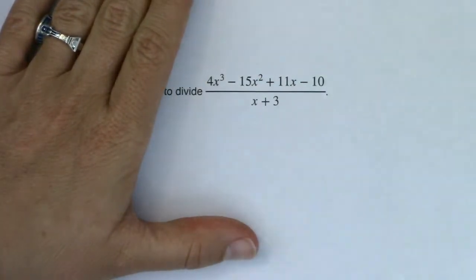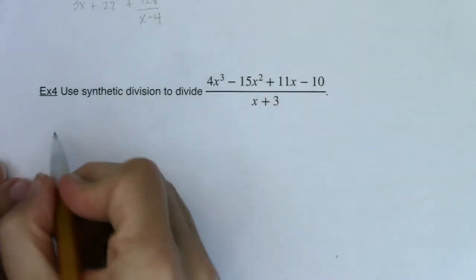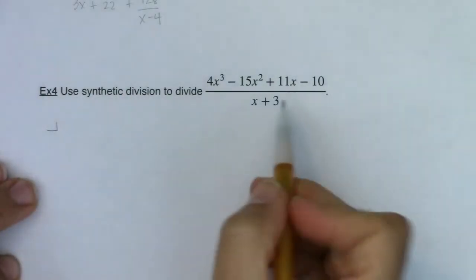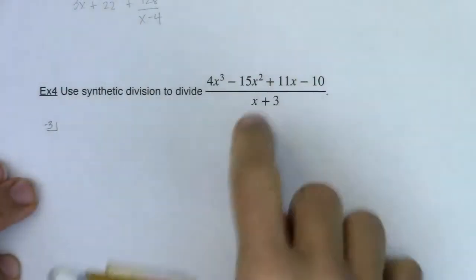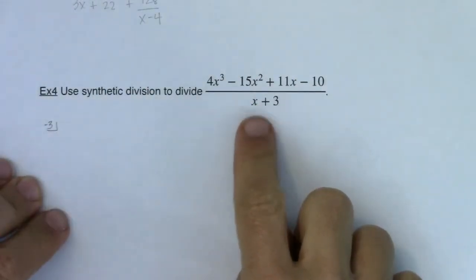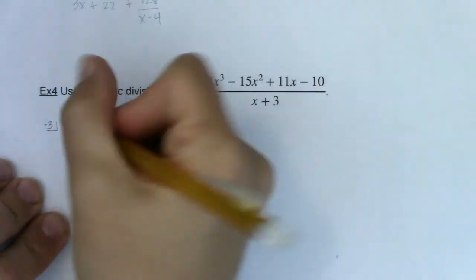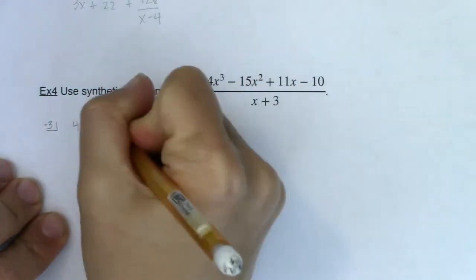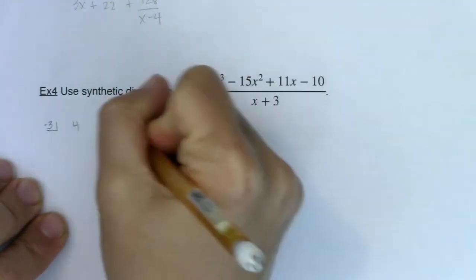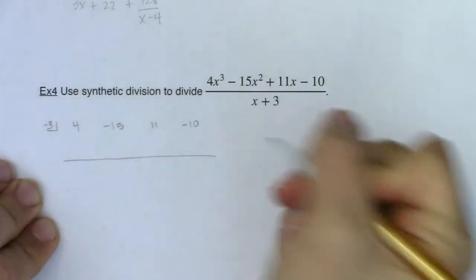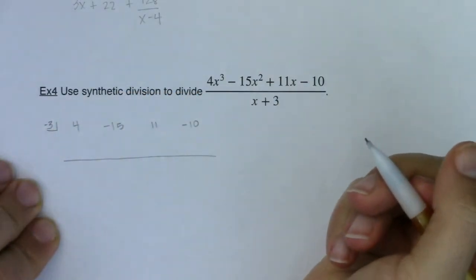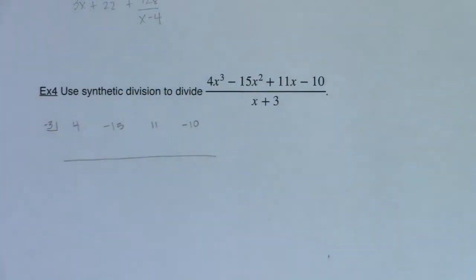Alright, so with this, let's synthetically divide and see what we get here. I'm going to put the number in my house. I see a plus 3 here. I'm going to go minus 3, or really, it's the value of x that would zero out your denominator. So my coefficients look to be 4, negative 15, 11, and negative 10. Alright, so here we go. We're going to add up and down and multiply across. Or at least that's how I think of it.